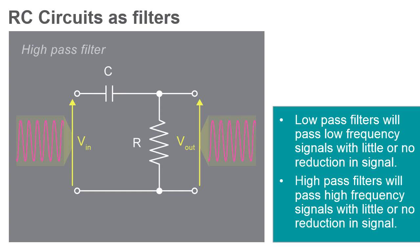High-pass filters work exactly opposite. High-frequency signals will pass from input to output with little or no reduction in signal, while low-frequency signals will be reduced significantly. These types of circuits are often used to block DC voltage from sensitive circuitry.